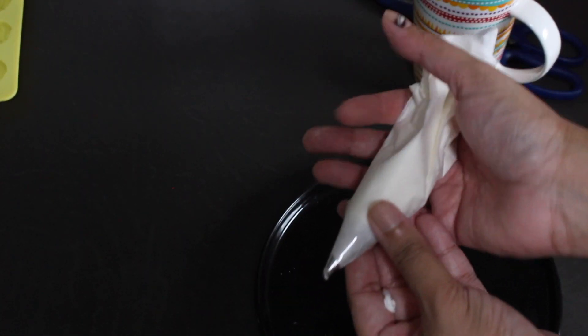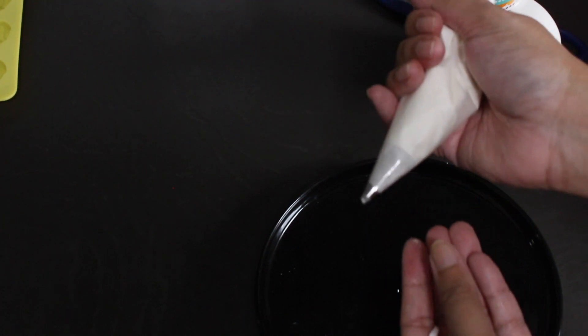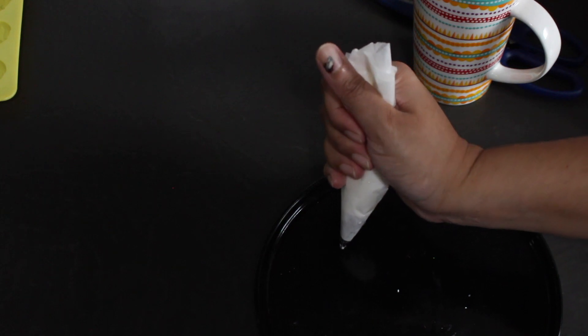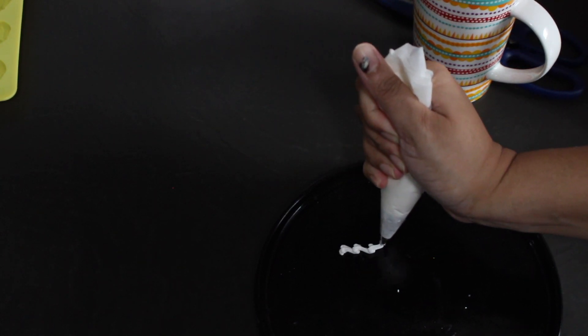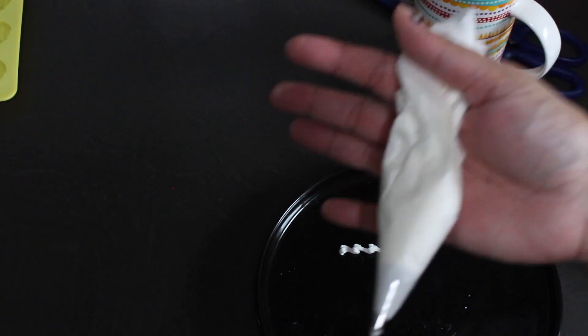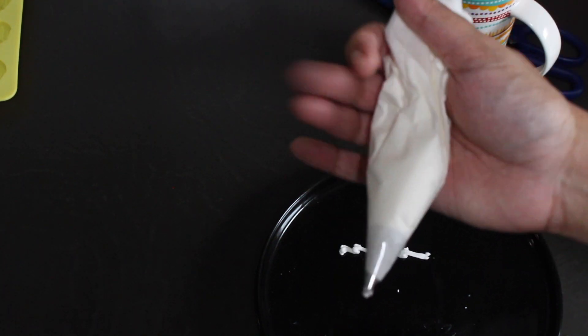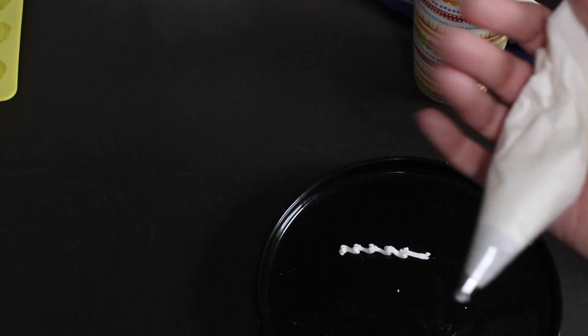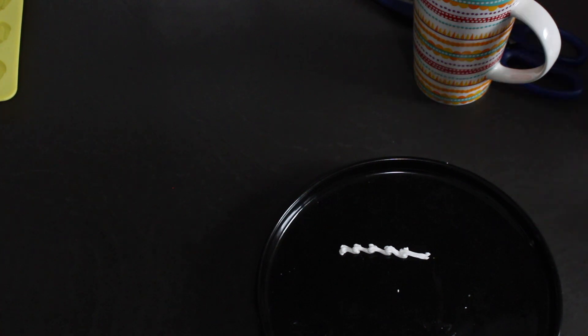And that my friends is how easy it is to make a piping bag at home, just using a little parchment paper. And then you can go ahead and pipe whatever pattern you'd like. I hope you found this little video helpful. If you did, don't forget to give this video a thumbs up and share it with family and friends that you think might find some use out of this. Thank you so much for watching. I'm going to see you really soon in my next video.